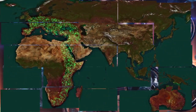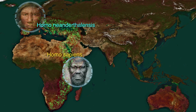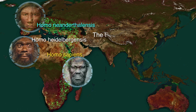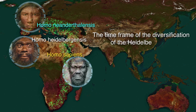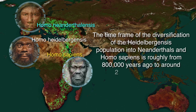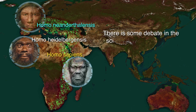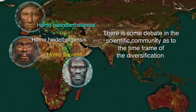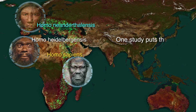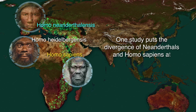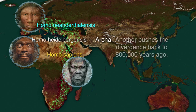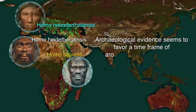As we noted in Chapter 10, both Homo sapiens and Homo neanderthalensis had evolved out of the Homo heidelbergensis population that stretched from northern Europe down into southern Africa. The time frame of the diversification of the heidelbergensis population into Neanderthals and Homo sapiens is roughly from 800,000 years ago to around 200,000 years ago. There is some debate in the scientific community, with various genetic studies and archaeological evidence pointing to different time frames. One study puts the divergence at about 516,000 years ago, another pushes it back to 800,000 years ago, and archaeological evidence seems to favor around 400,000 years ago.